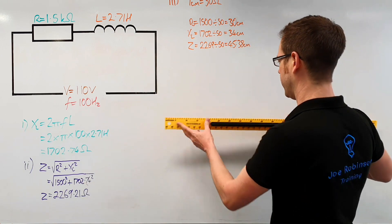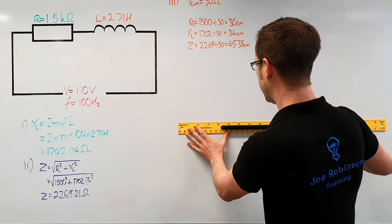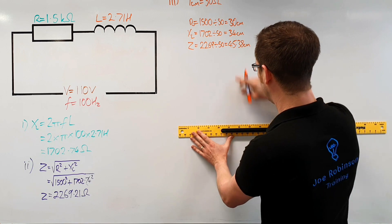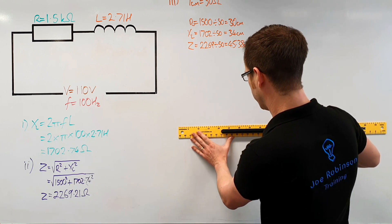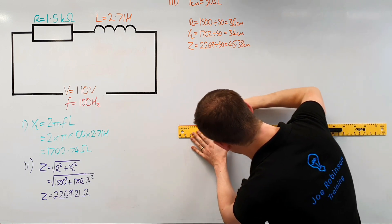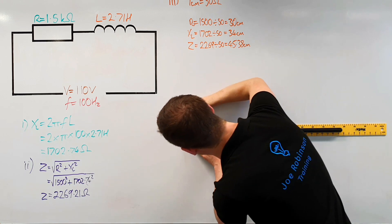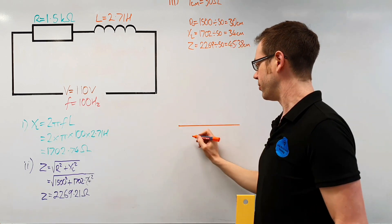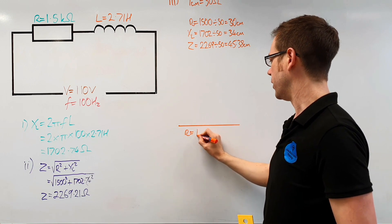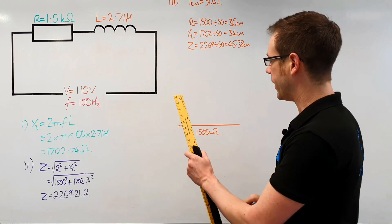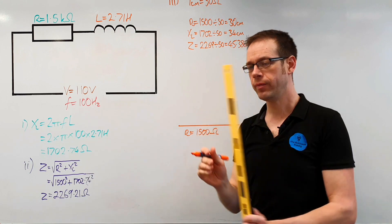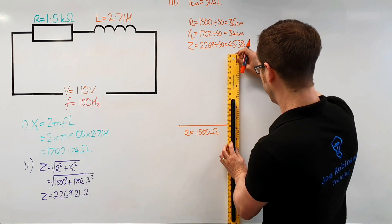The resistance line is always the horizontal line. I'm going to draw this line 30 centimeters long, making sure I leave enough space. So we draw a line that is 30 centimeters long from there to there. That represents the resistance — always the horizontal line — so resistance is 1,500 ohms.